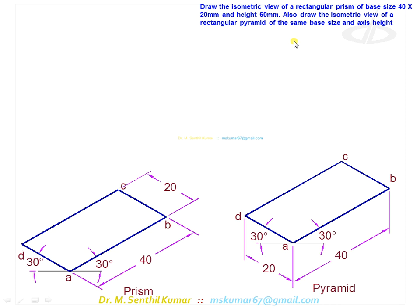For a prism, straight away draw a vertical line. The vertical line is nothing but the isometric height line. Through A, B, C, D draw isometric height lines of 60.